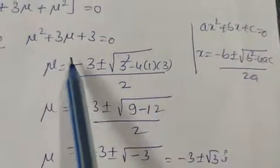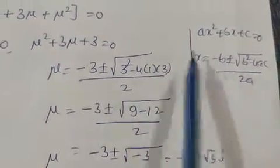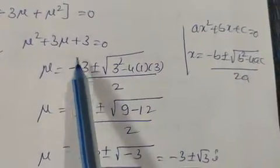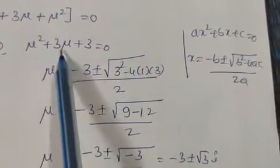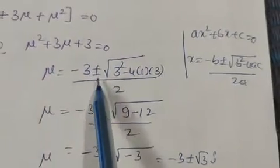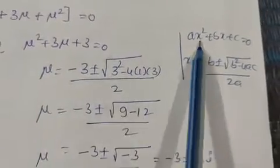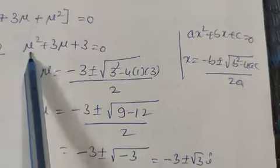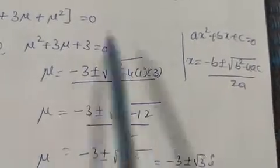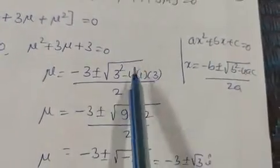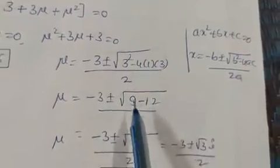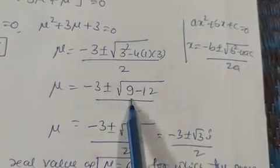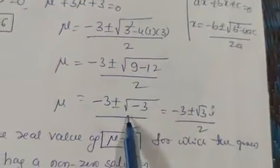Comparing mu² plus 3mu plus 3 equals 0 with Ax² plus Bx plus C equals 0, we get A equals 1, B equals 3, C equals 3. Substituting: mu equals [minus 3 plus or minus sqrt(9 minus 12)] divided by 2.